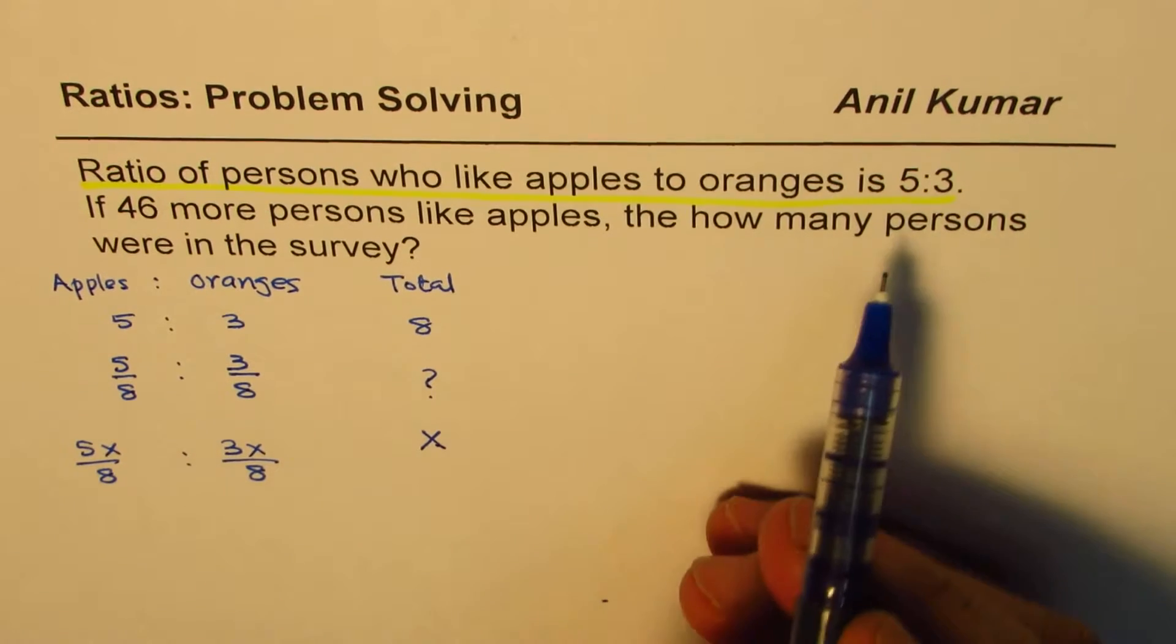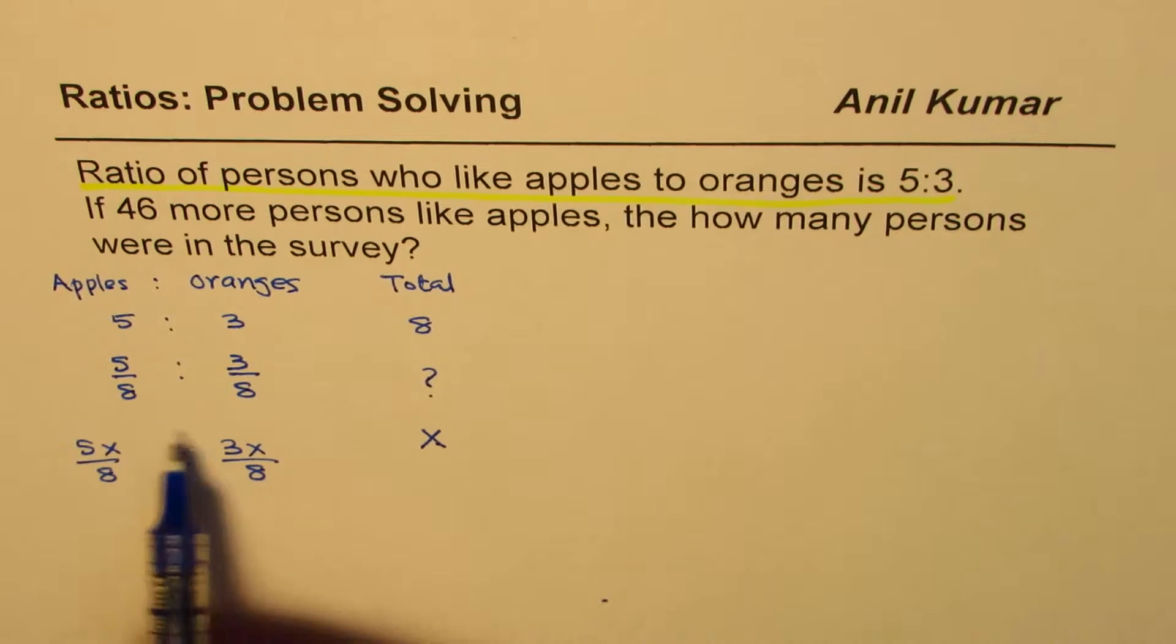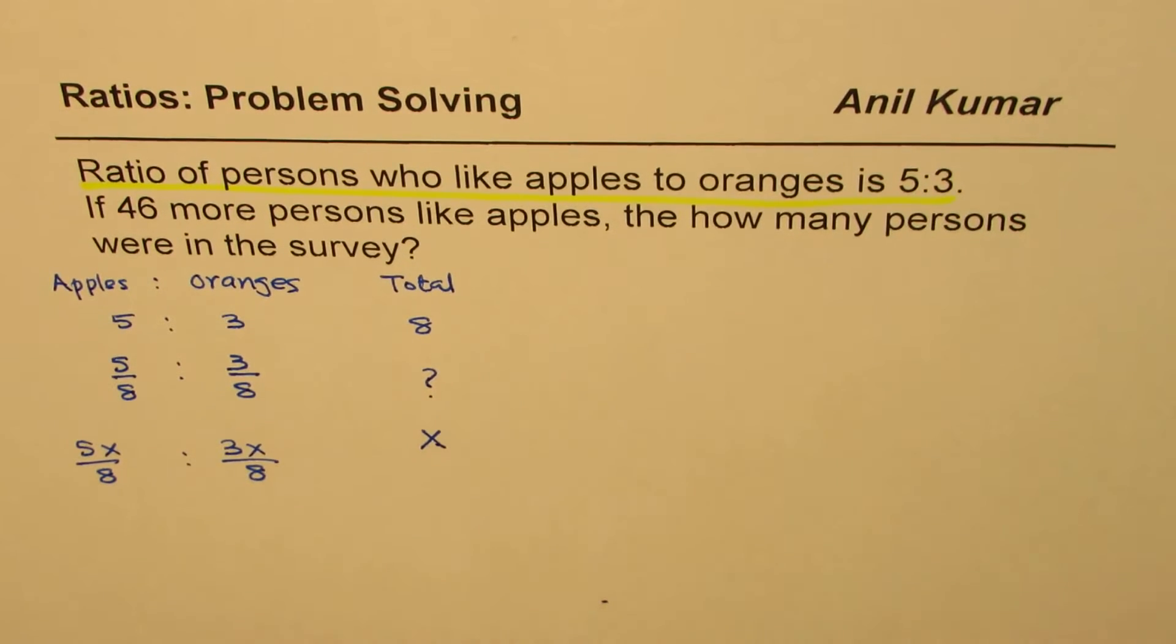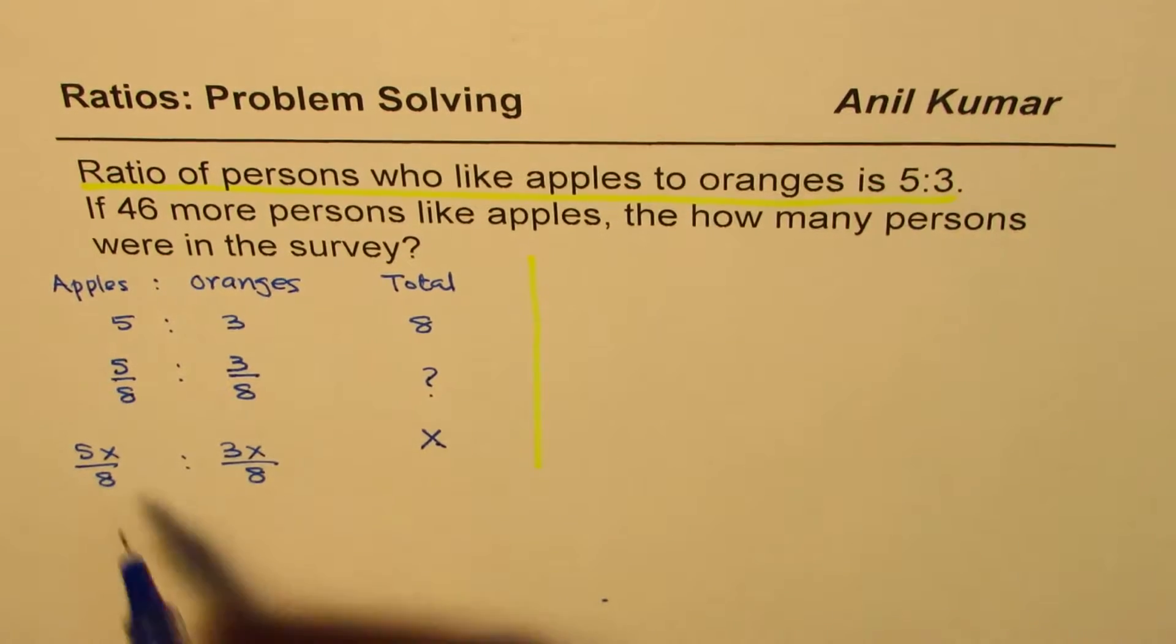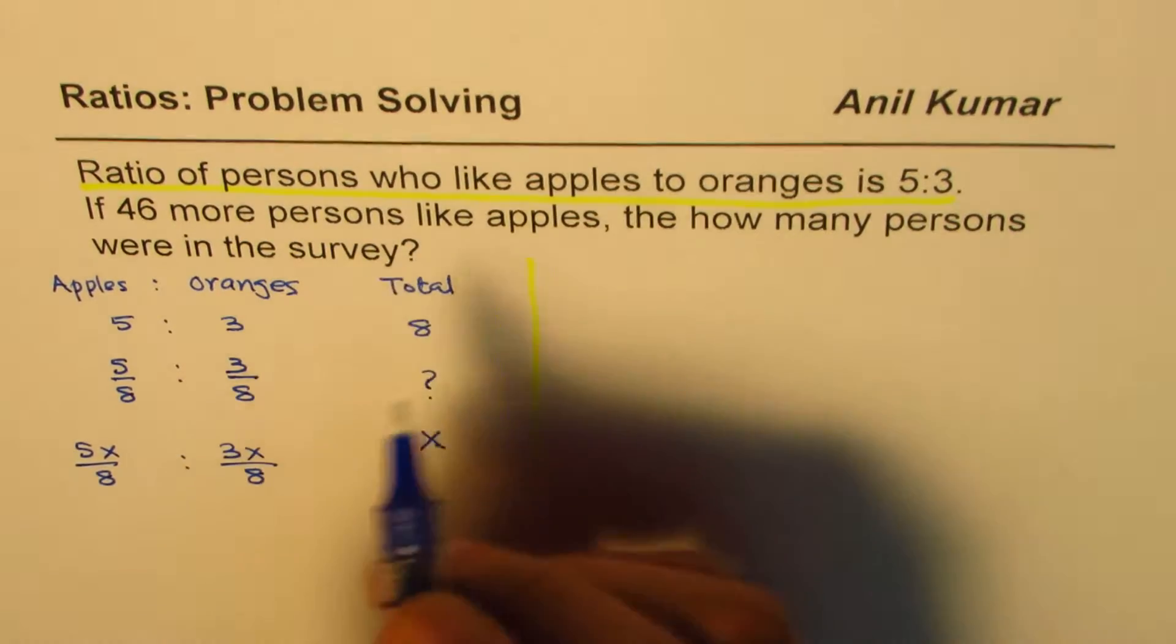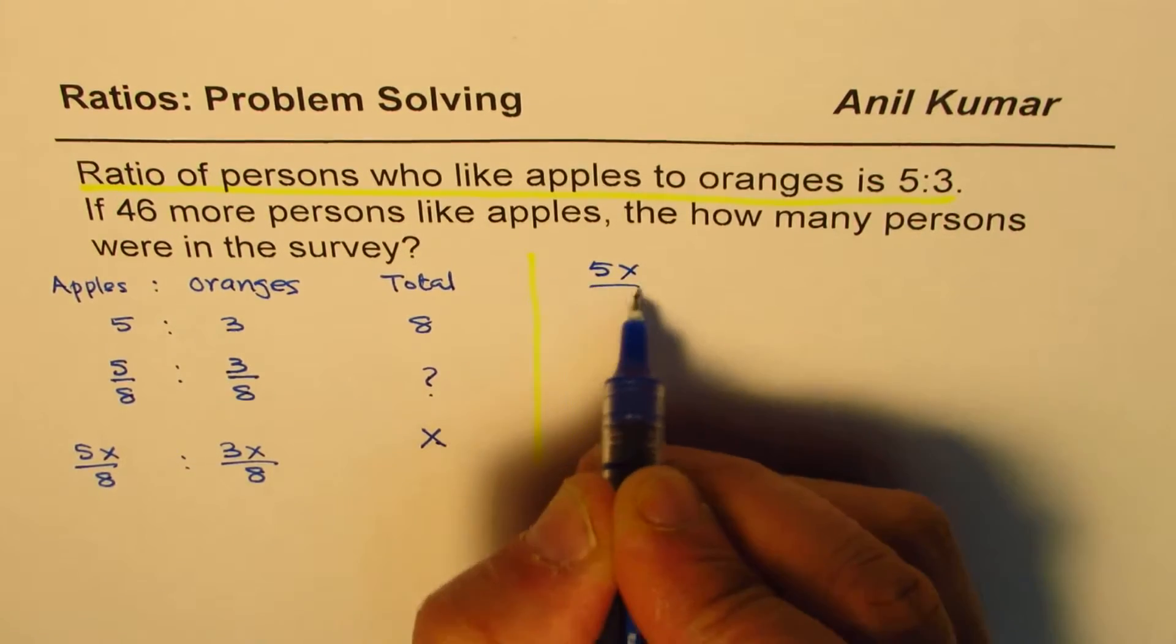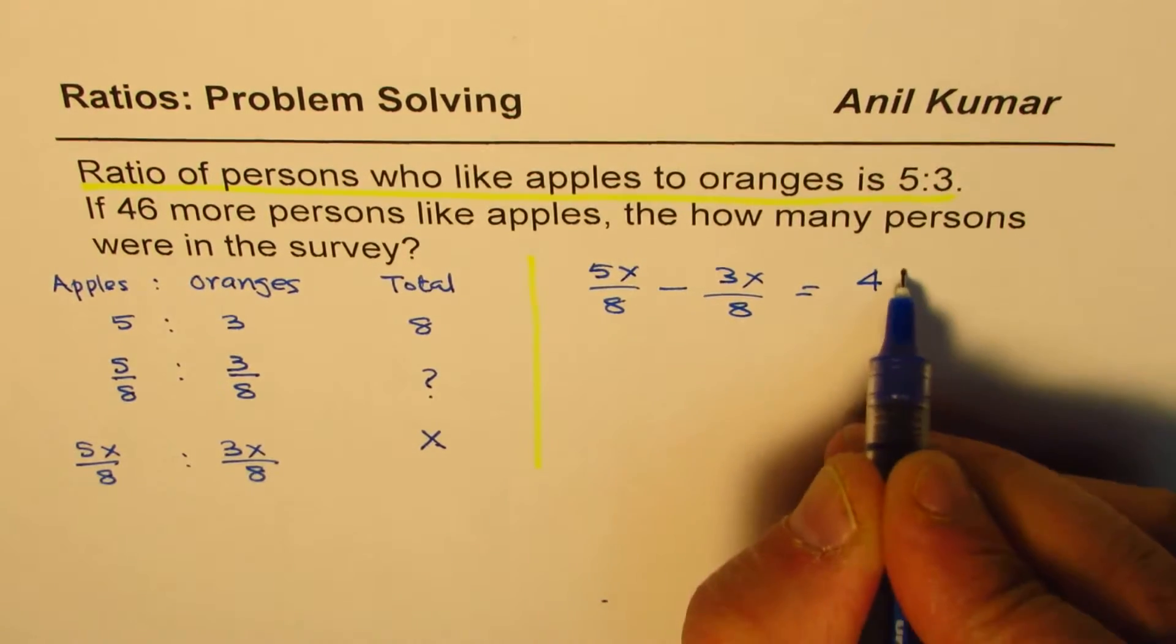Now what we are given here is that 46 more persons like apples. That means their difference is 46. That means difference between apples to oranges is 46. So we say 5X over 8 minus 3X over 8 is 46.